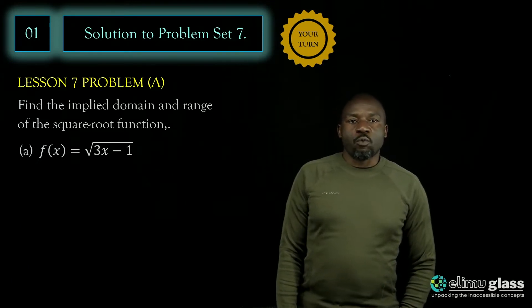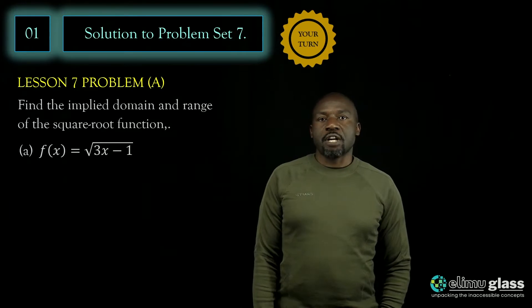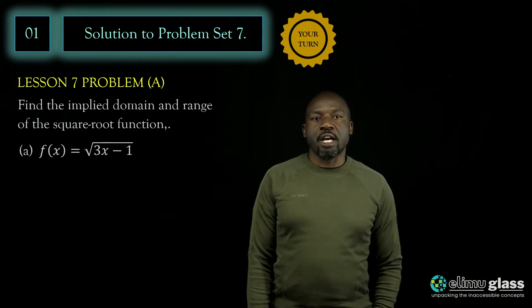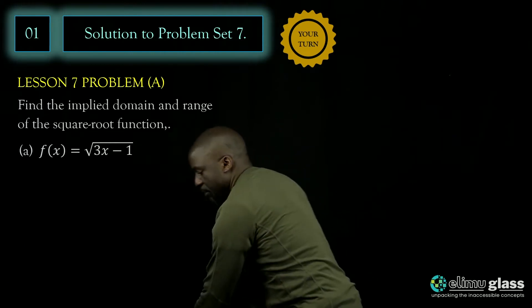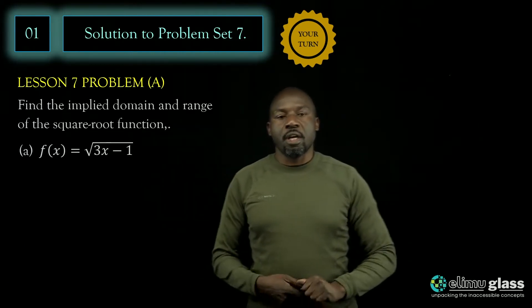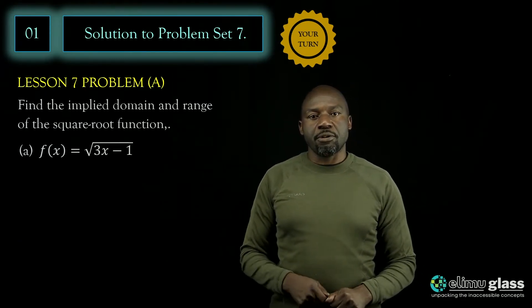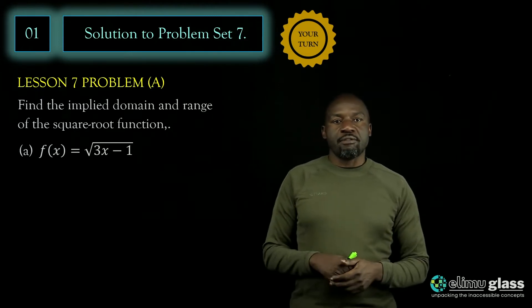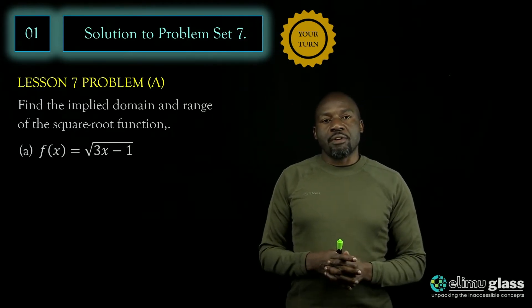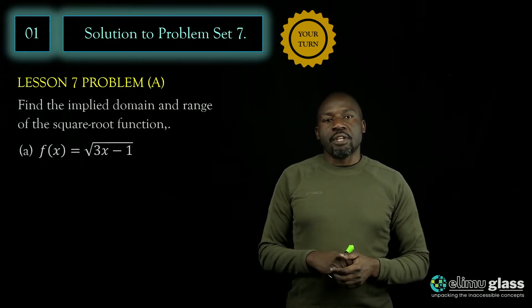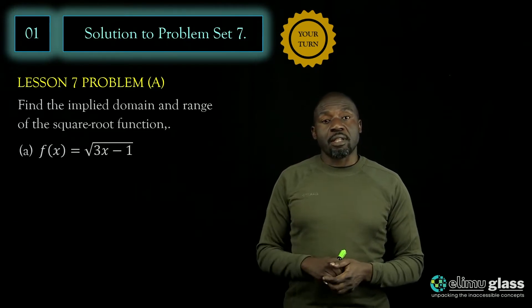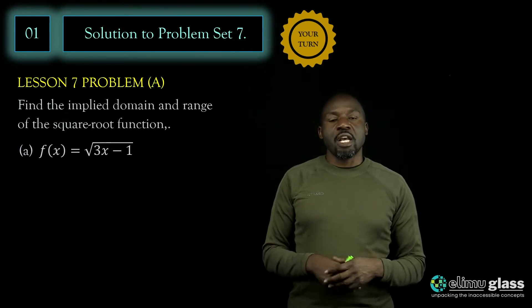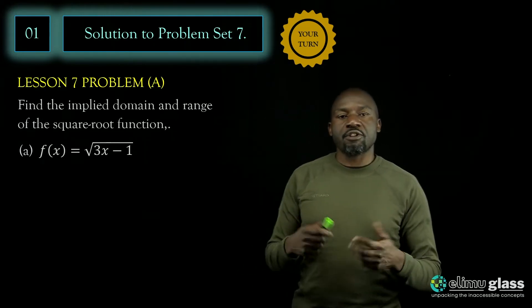In problem set number seven there were four questions that I asked you to try on your own. By the end of the video you should know where you made a mistake and make the necessary correction. In video number seven we looked at how to determine the implied domain for rational functions — we looked at rational functions and square root functions. In problem set seven we are looking at how to determine the implied domain for square root functions.